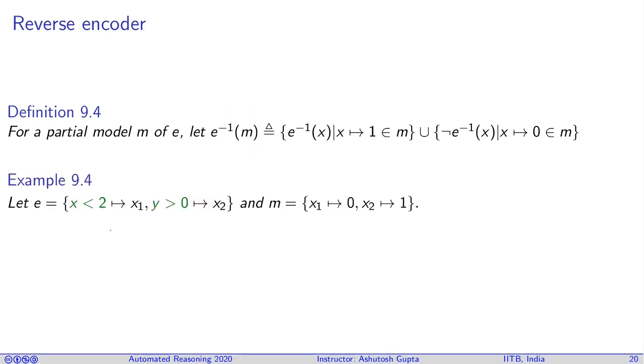Once you have assigned a certain number of variables, what is the meaning in the world of theory? You take the model and map every variable back to its original atom and collect them—that I call e inverse of m. E is the map which takes an atom and gives you Boolean variables. Let's suppose we have this model: x1 is assigned to 0 and x2 is assigned to 1. E inverse of m would be mapping variable x1 to this atom and x2 to this atom. E inverse of m looks at what x1 is assigned—x1 is assigned to 0, so you put the negation of the atom; otherwise you take the positive of the other atom.